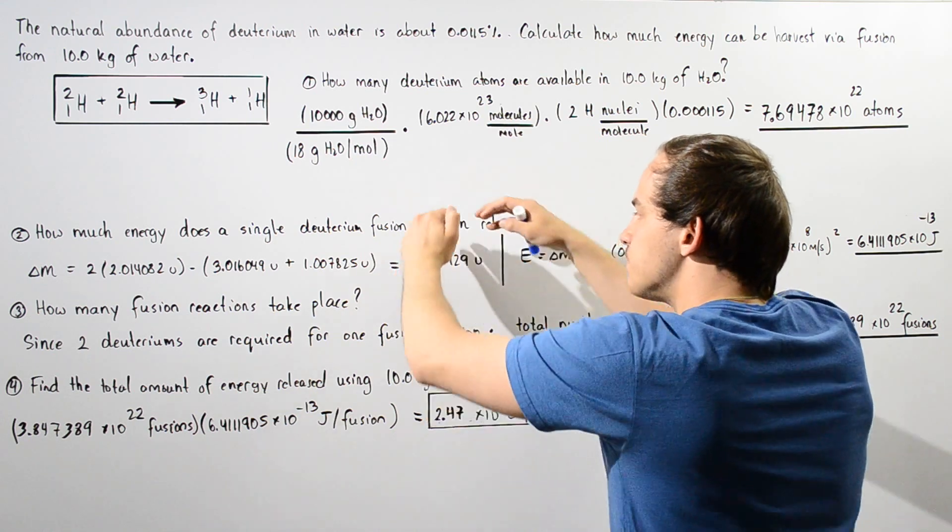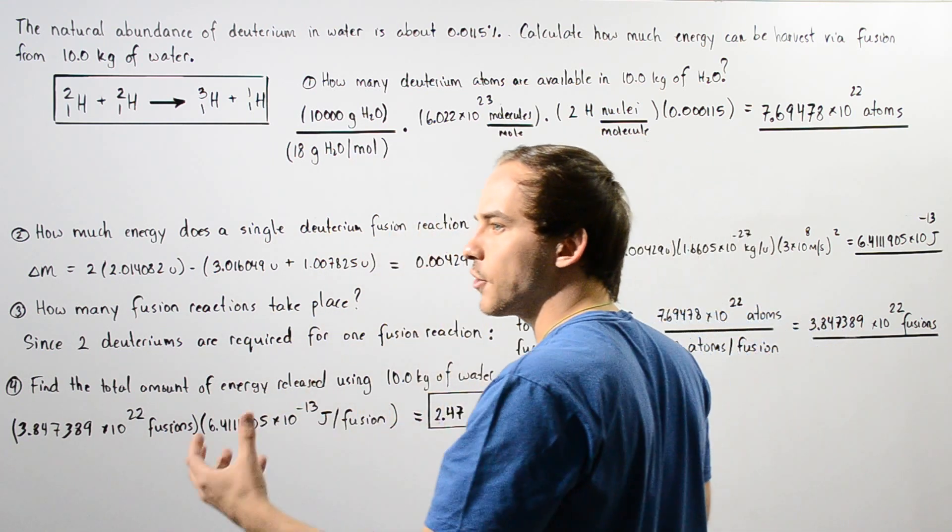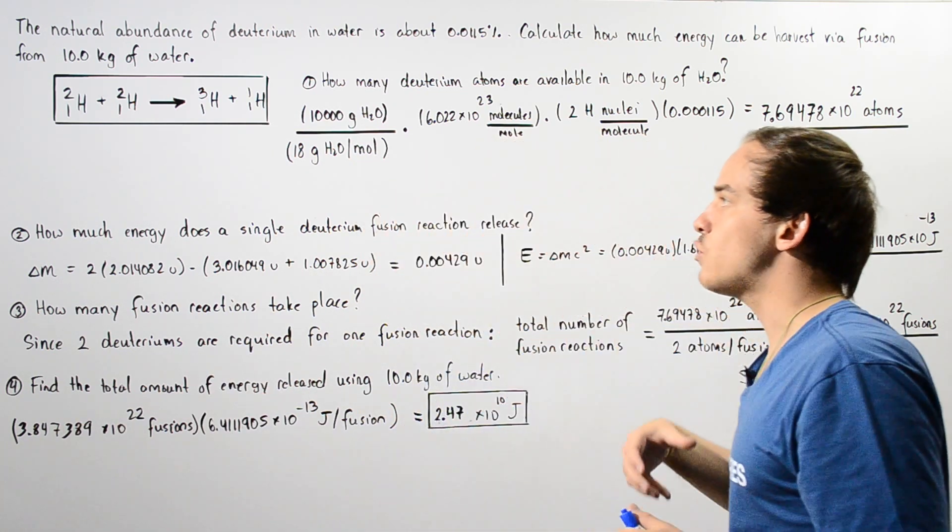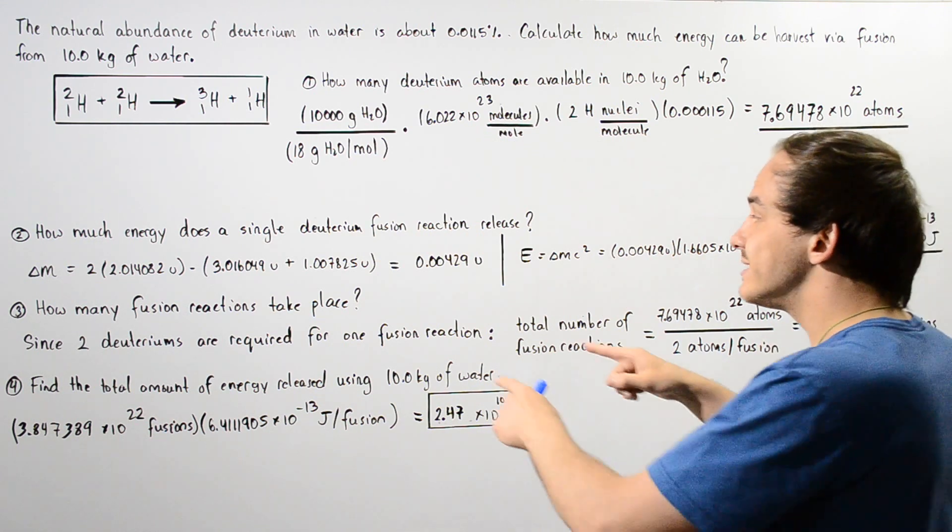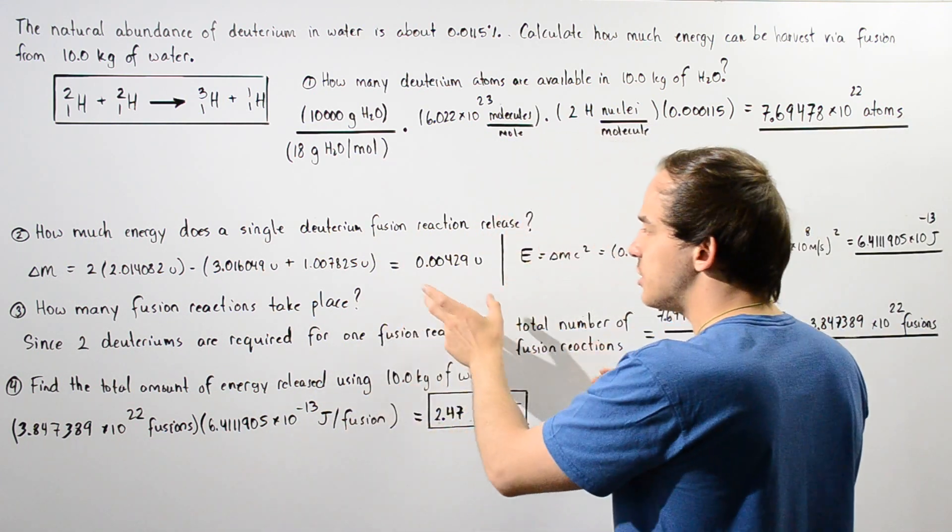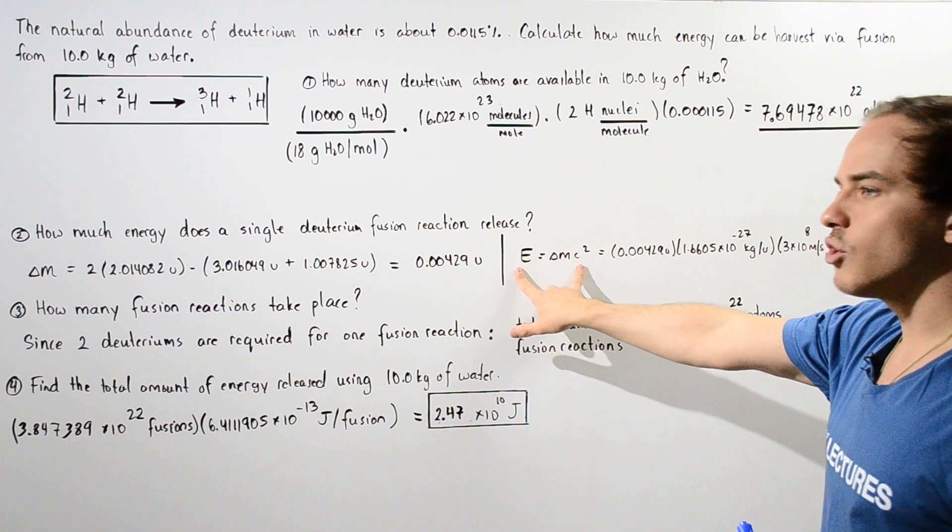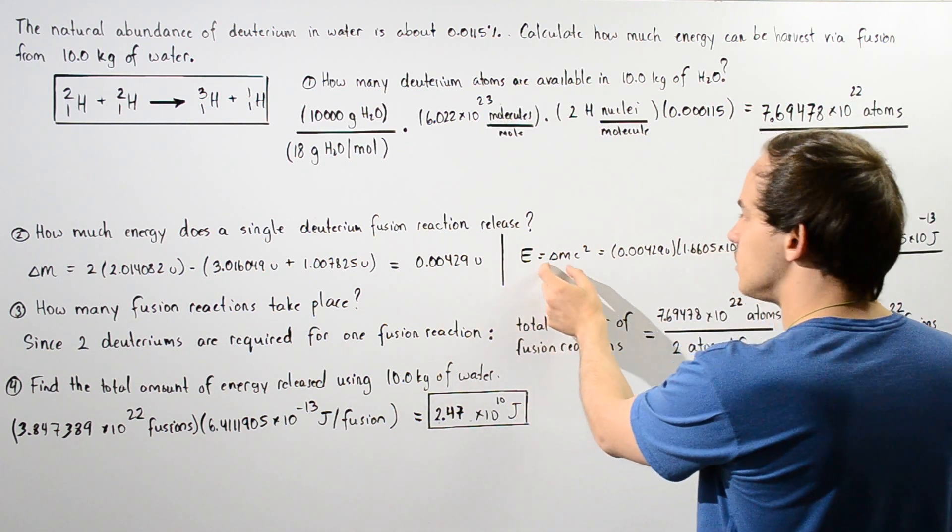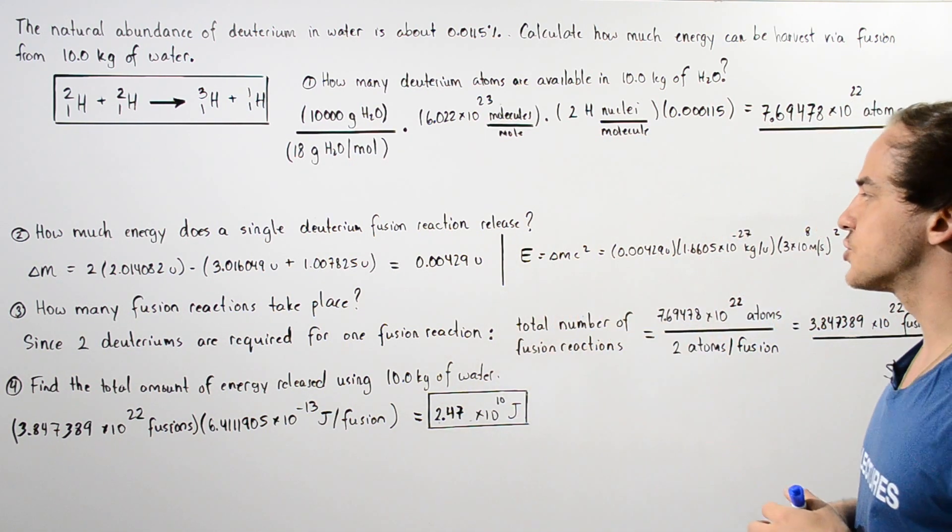And this conversion, this mass basically converts or transforms into energy. So to calculate how much energy this corresponds to, we use the rest mass energy equation. So E equals delta m times c squared.